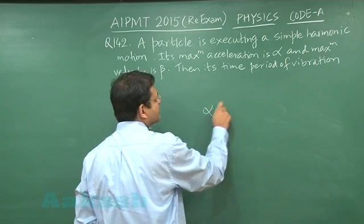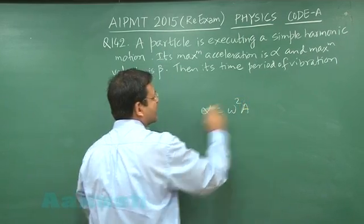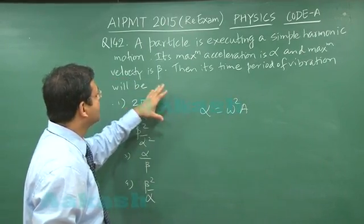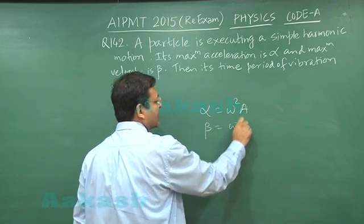Now what is the expression for maximum acceleration? That is omega square A. So alpha has been given as omega square A. And it is saying that maximum velocity is beta. What is the expression for maximum velocity? This is omega A.